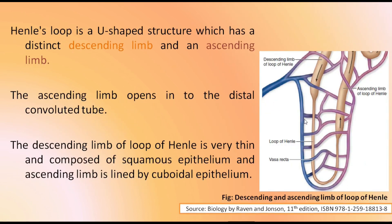The loop of Henle or Henle's loop is a U-shaped structure with a distinct descending limb and an ascending limb. The ascending limb of the loop of Henle leads to the distal convoluted tubule. The descending limb of the loop of Henle is very thin and is composed of squamous epithelium, while the ascending limb is lined by cuboidal epithelium.